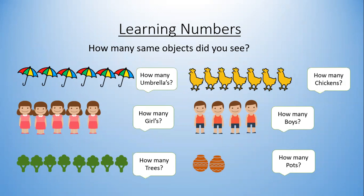What we have to do here: how many same objects did you see? Now here are some questions — how many umbrellas are there? Can you count how many umbrellas are here? How many girls are here? How many trees are there? Can you count how many chickens? How many boys? And finally, how many pots? You did it — now let's check.